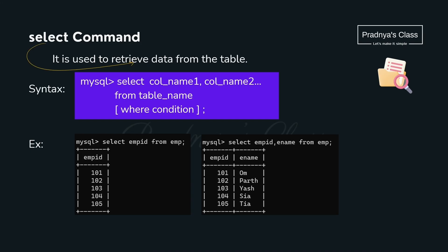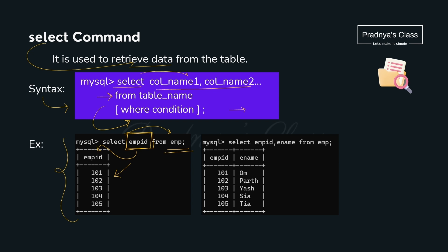We know the SELECT command is used to retrieve data. The syntax is: the keyword SELECT followed by the list of columns which we need to display, then FROM table name. If you have a condition, you mention it with the WHERE clause. Look at the simple example: SELECT EMP_ID FROM employee. Only the single column EMP_ID is displayed. If you have more than one column to display, you can separate them by comma.